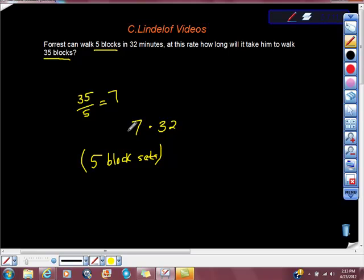So 7 sets of those 5-block sets would be 35, so then we're going to do 7 times 32. This is going to be multiple choice, just so you know. So it's 14, 1, 21, 22. Oh, this problem sucks. 224 minutes.